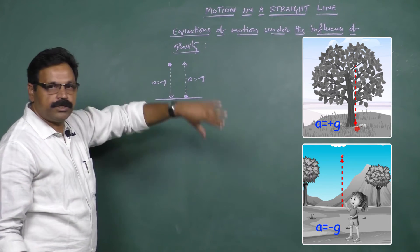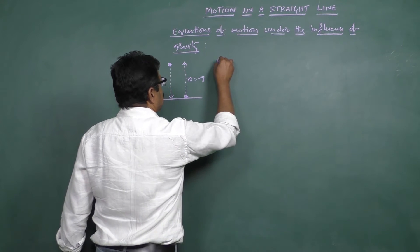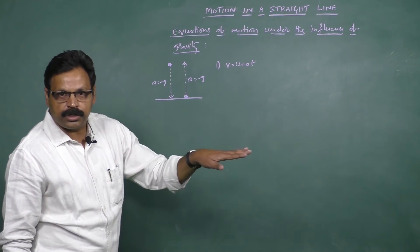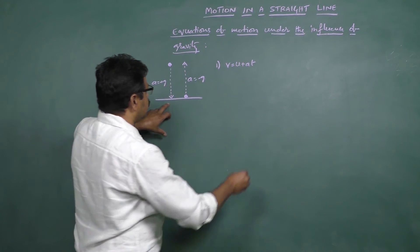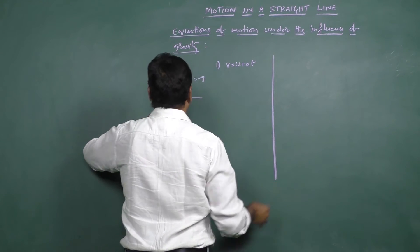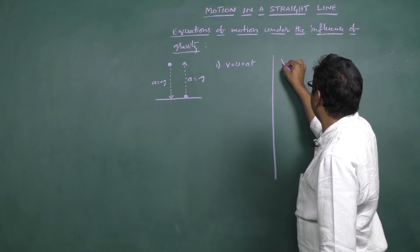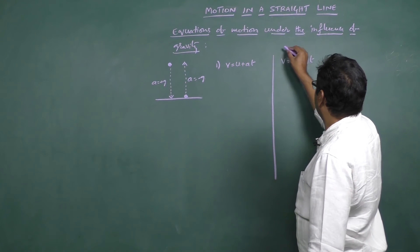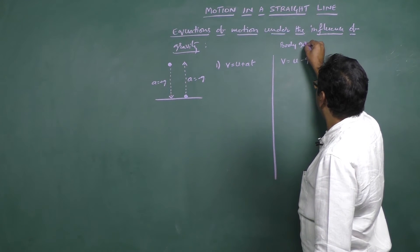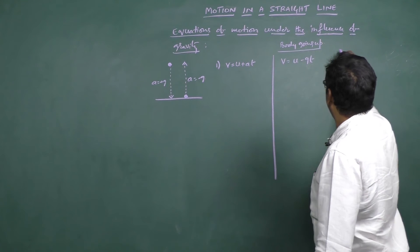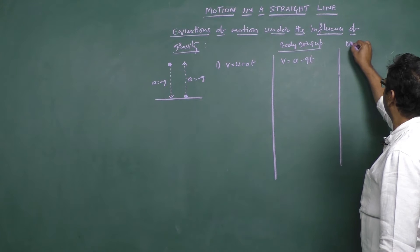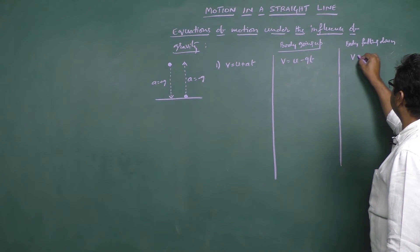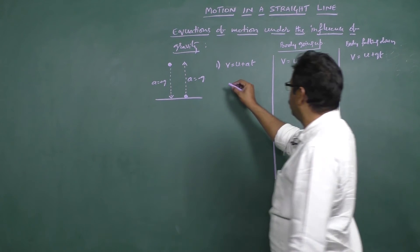Simply replacing the value of 'a' with plus g or minus g depending upon how the body is moving, the equations of motion will change. As an application, v = u + at is the equation for a body moving along a horizontal path. When a body is moving upwards under the influence of gravity, the same equation changes to v = u minus gt. When the body is falling downwards, it becomes v = u plus gt.